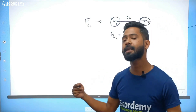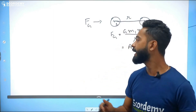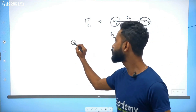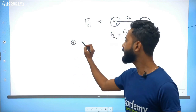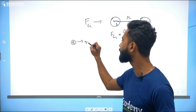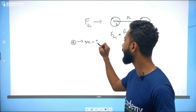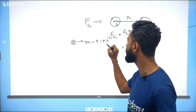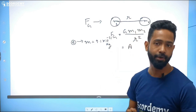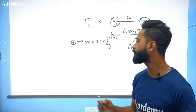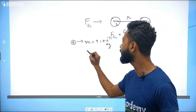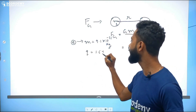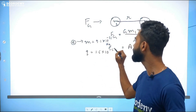When subatomic particles were discovered, people came to know the mass and charge of an electron. The mass of an electron is equal to 9.1 into 10 to the power minus 31 kg. The charge of an electron is 1.6 into 10 to the power minus 19 coulombs.